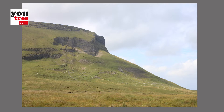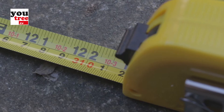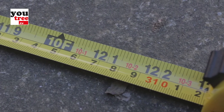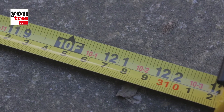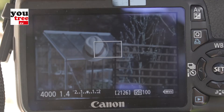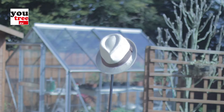On the other hand, at f1.8, if you focus on an object 10 feet away, only everything from 9 feet to 11 feet will be in focus, and everything in the background beyond this range and in the foreground will be out of focus.